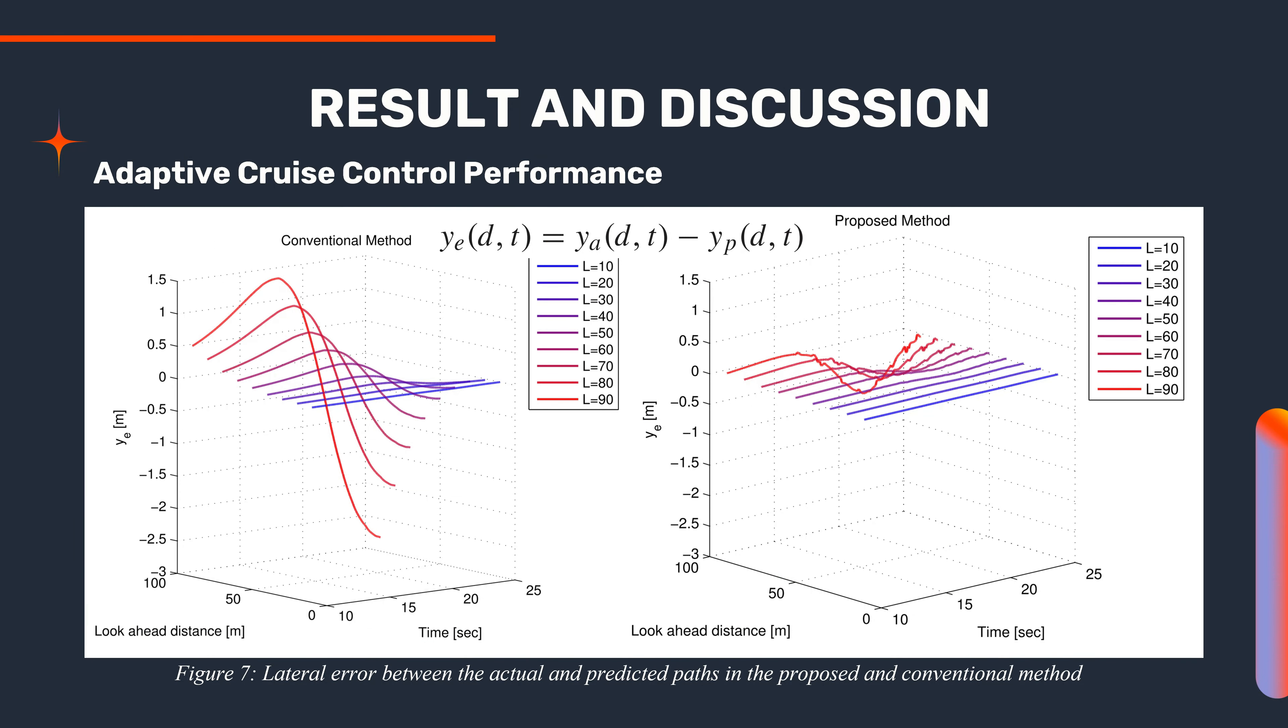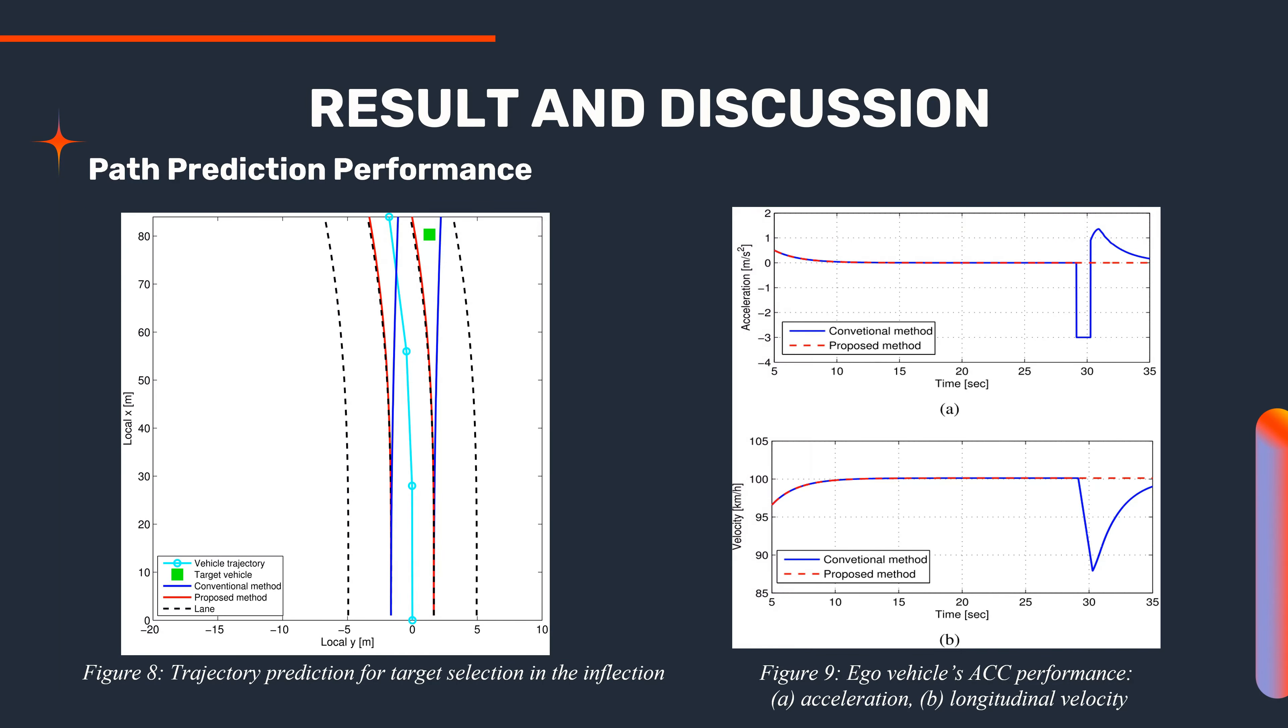From this figure, we can see that the lateral error of the conventional method is larger than the actual predicted path in the proposed model. This simulation result shows that the target vehicle was driving on the right side of the road with regard to the ego vehicle.